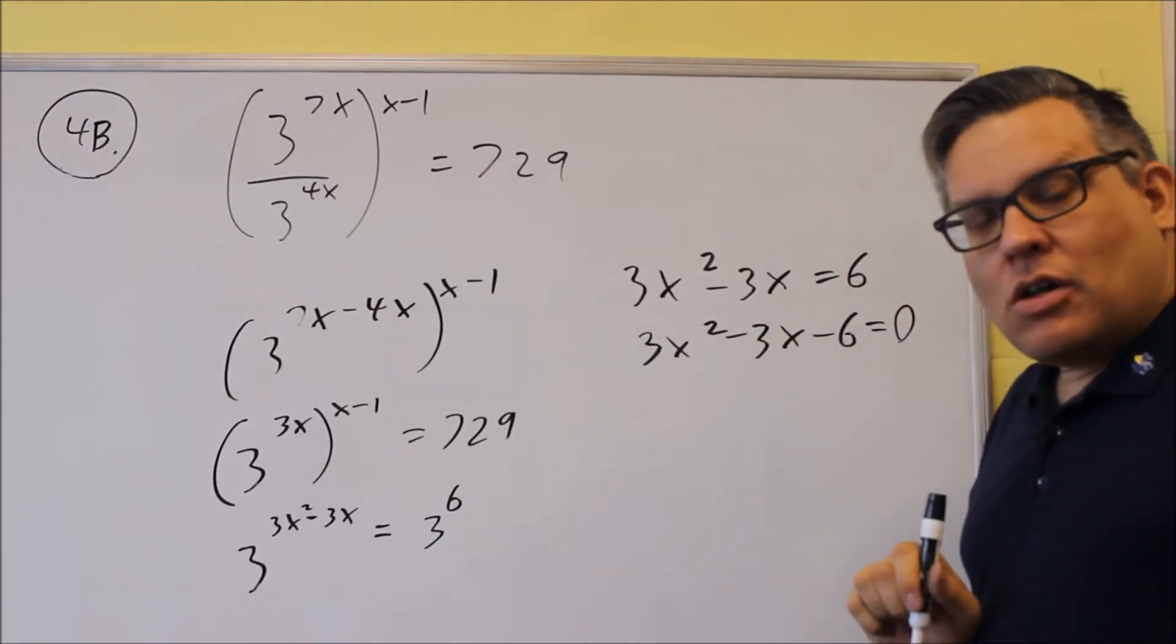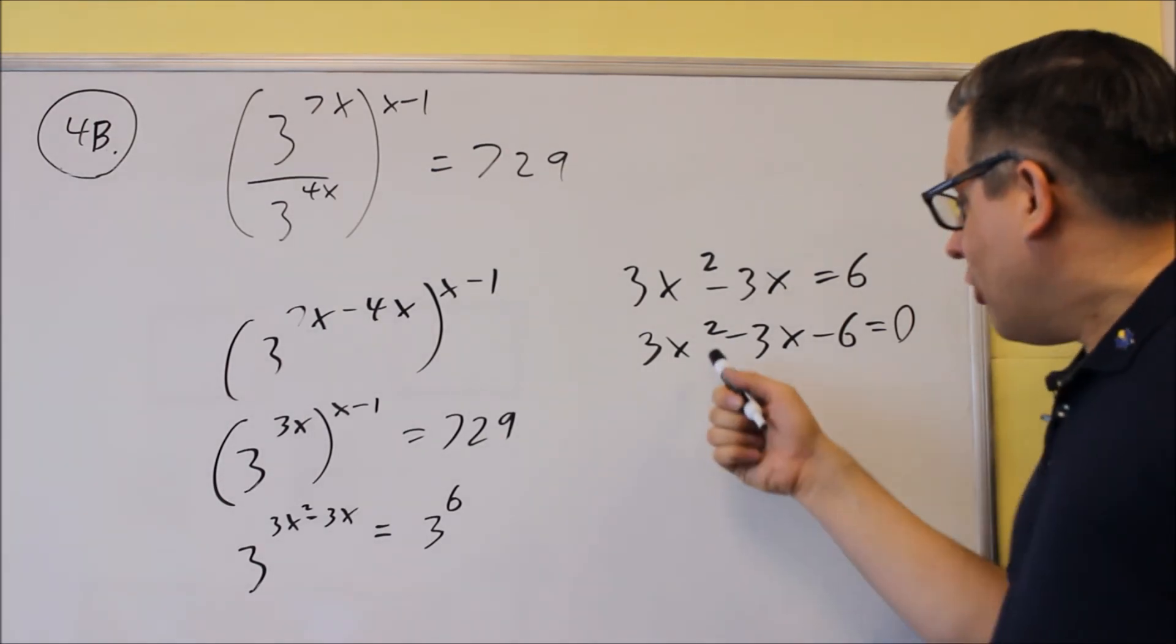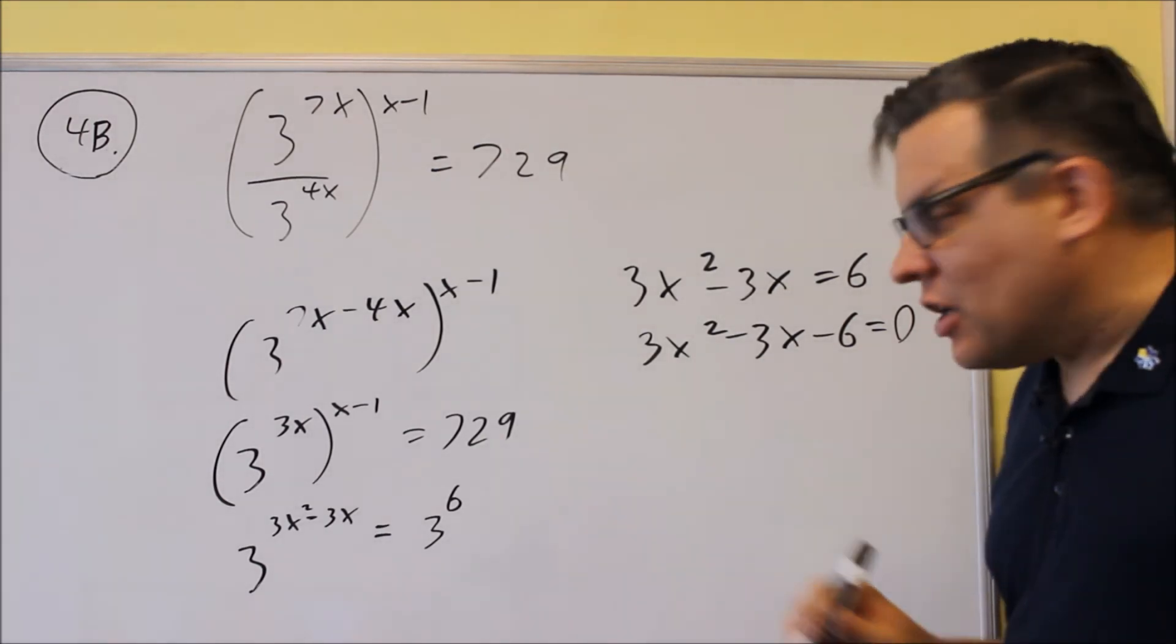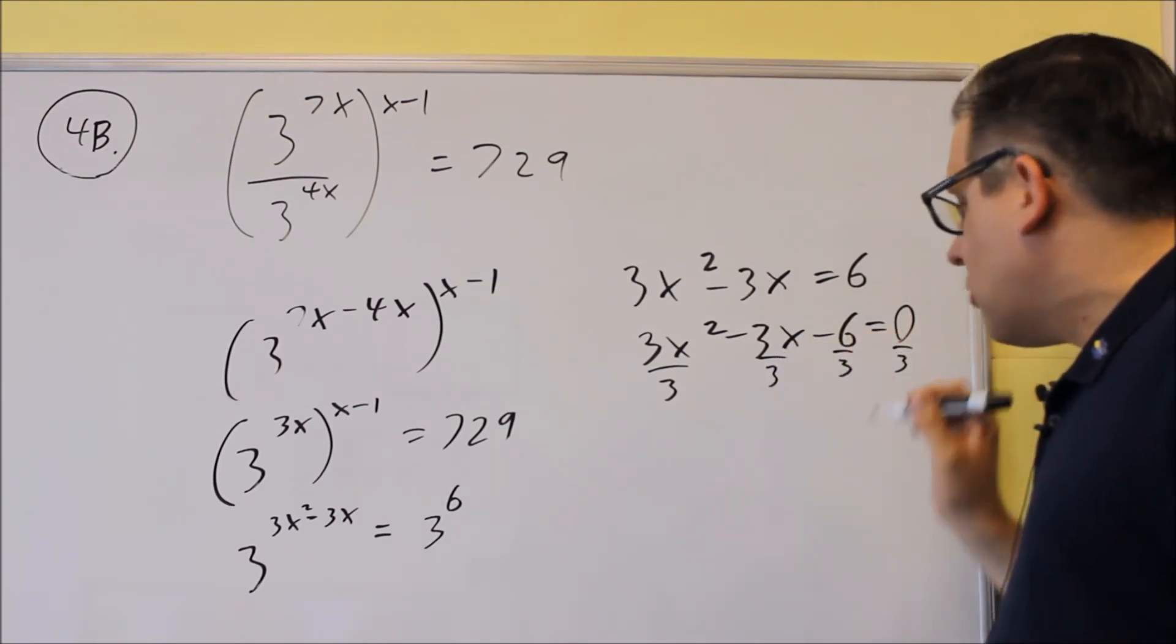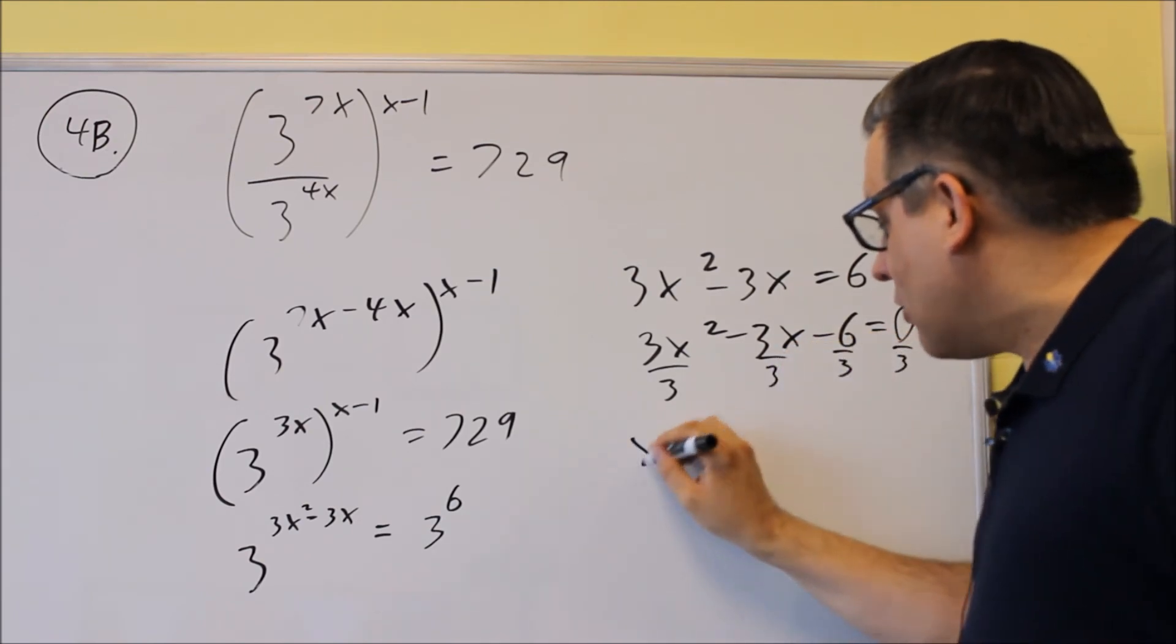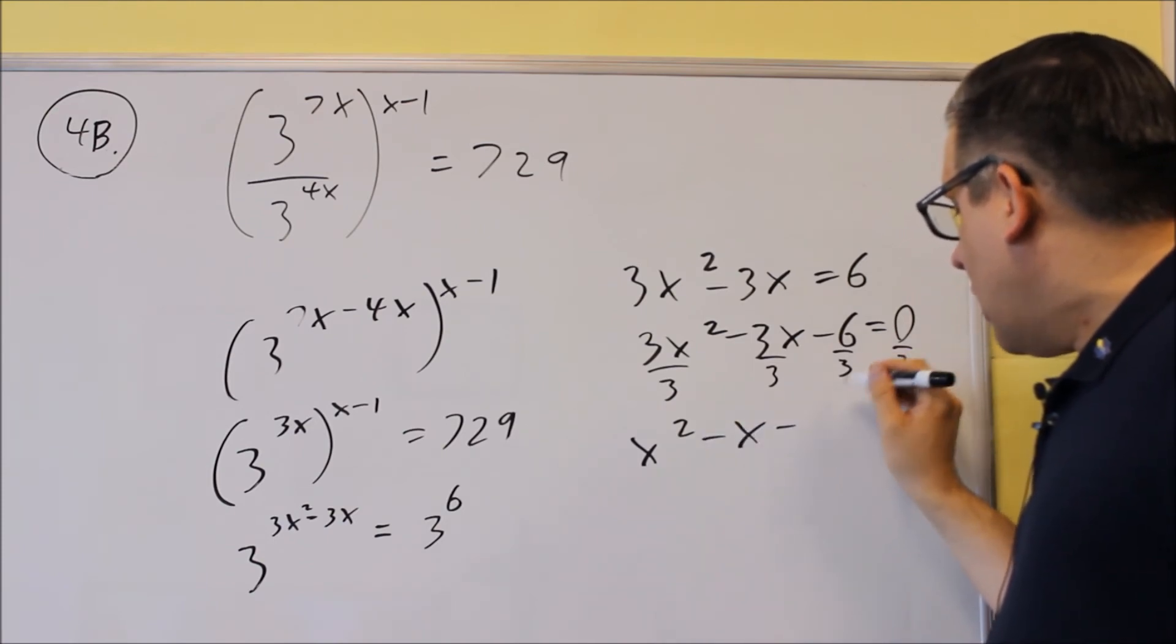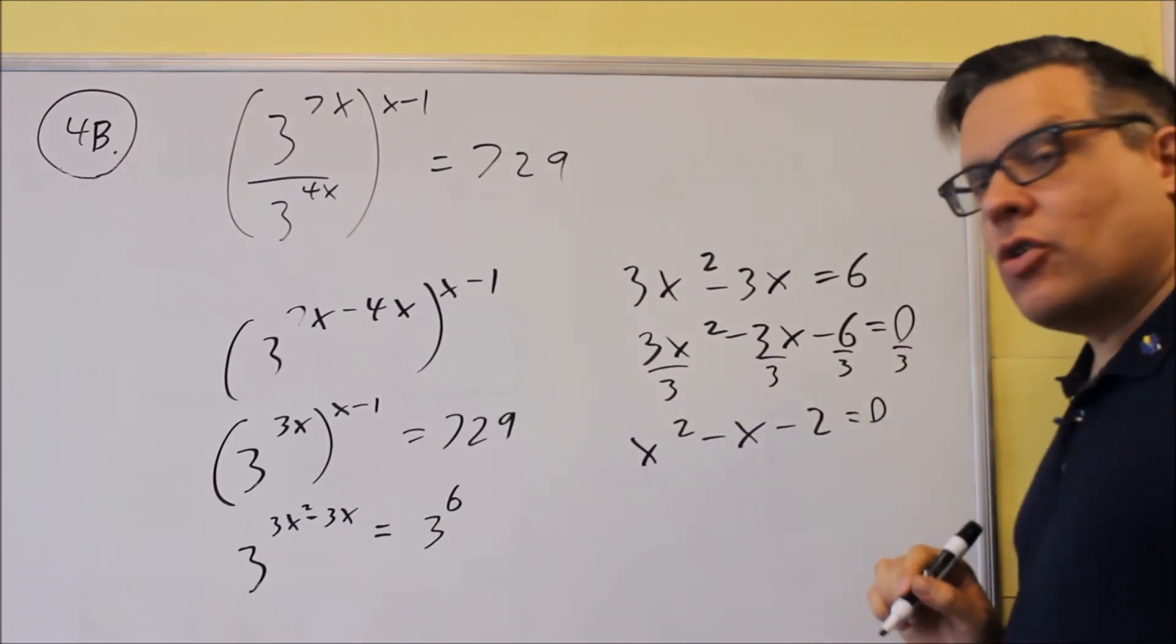Now you could factor it that way like I did in the key, or if you notice that everything is divisible by 3, you could also divide everything by 3 just to make the numbers smaller, easier to factor. It's not going to affect your answer.